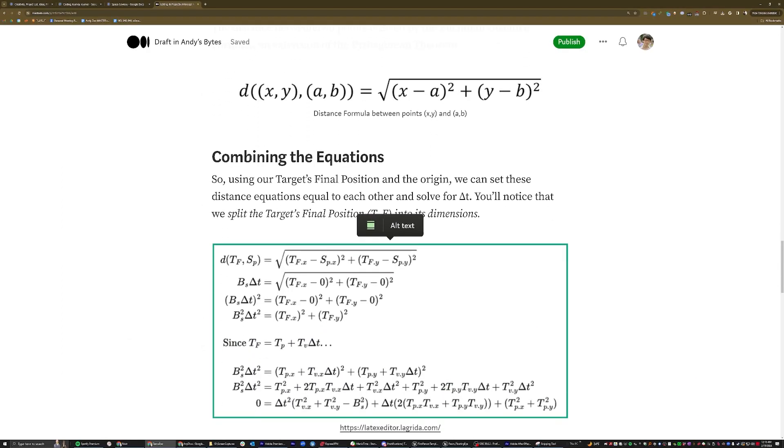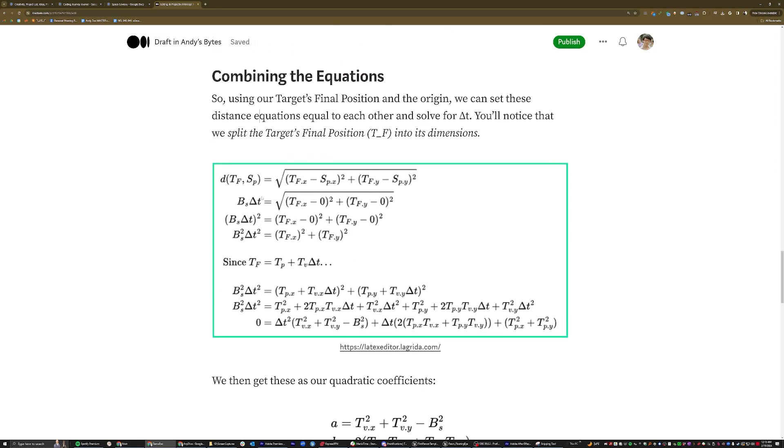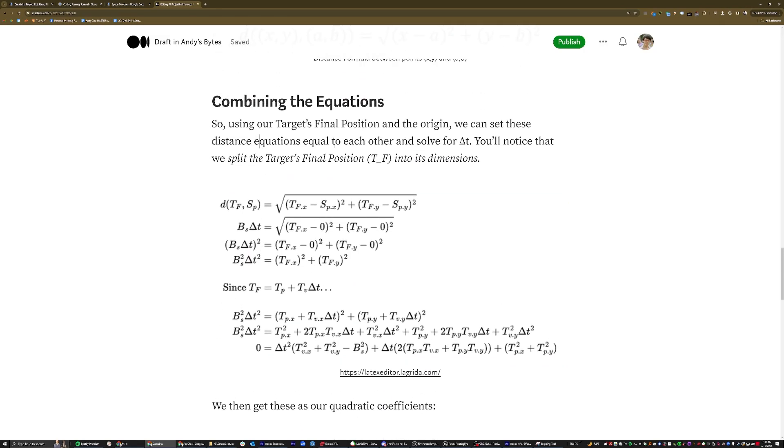So using the target's final position and the origin, which is where the shooter is, we can set these distance equations equal to each other and solve for time. And you'll notice that to do this with the original equation, we have to split the target's final position into its dimensions.